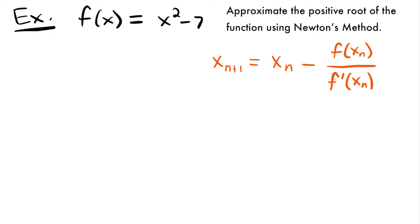Our problem wants us to find the positive root of our function, which means it probably has a negative root as well, but we're only looking for the positive one — a positive value of x where our function crosses the x-axis, which is where x-intercepts occur. To find our initial guess x sub 1, I like to plug values into our function and check the sign of the result. We're looking for an area where the y-values switch from negative to positive or vice versa, because that means our function crossed the x-axis somewhere in between.